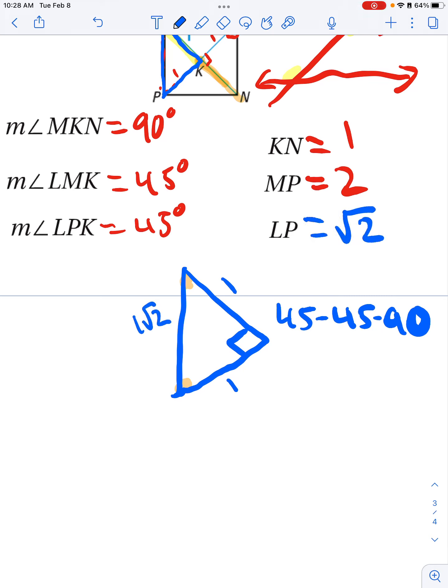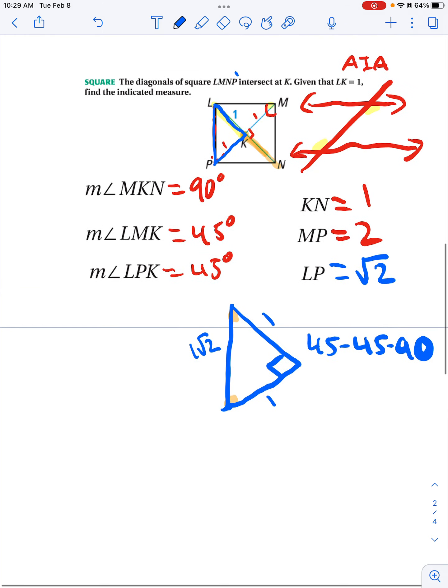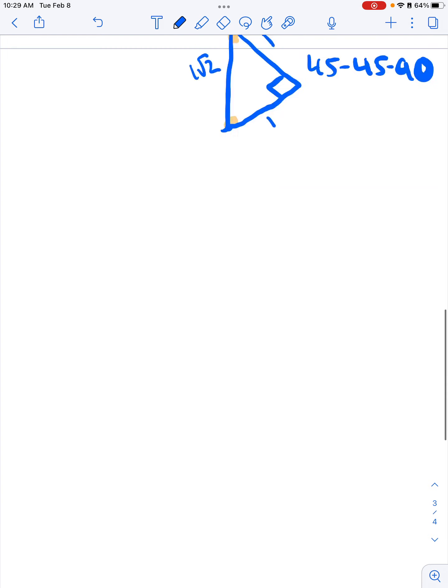So if my legs are one, then that means that this is one square root of two, or just the square root of two. Again, that's our shortcut for a 45-45-90 triangle.